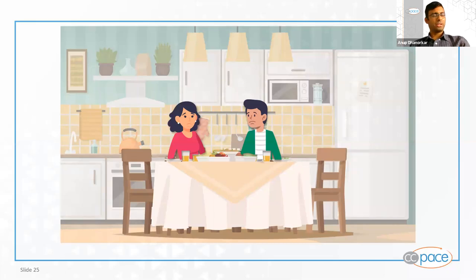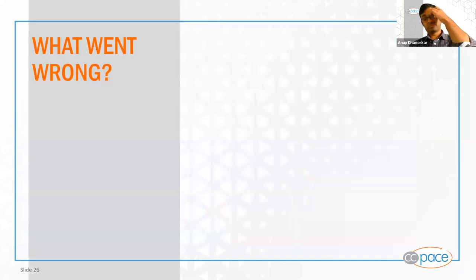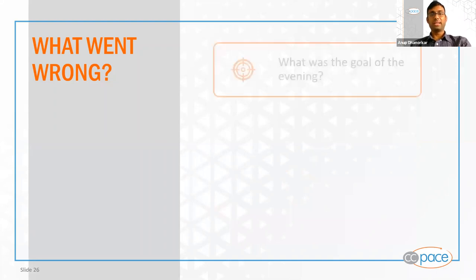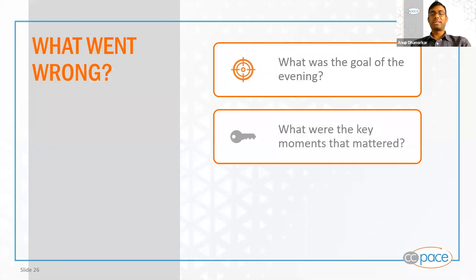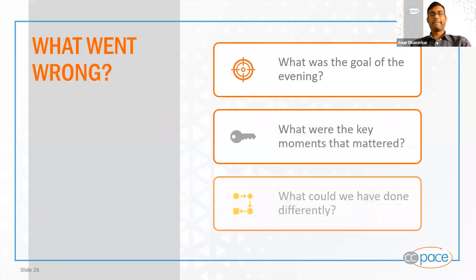That's the story — started out very exciting, started out with dreams in our eyes, and ended up not being a happy ending. So what went wrong? Let's do a root cause analysis. What was the goal of the evening? What were the key moments that mattered? And what could have been done differently? Let's take these one by one.